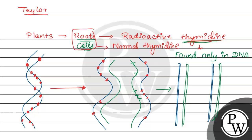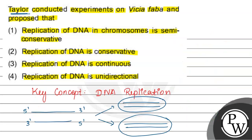तो इससे क्या पता चला — daughter copies of DNA में one strand जो है वो one parental strand है, और one strand जो है वो new है. तो इससे Taylor ने conclude किया कि DNA replication जो होता है वो semi-conservative mode of replication होता है. तो हमारा answer है — replication of DNA in chromosomes is semi-conservative — option one. Hope you have understood the concept. Thank you and all the best.